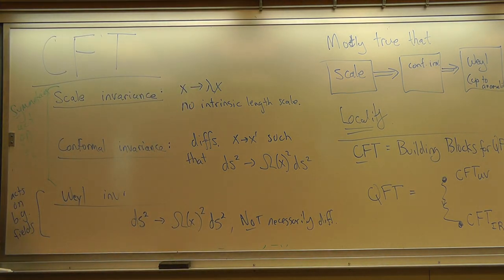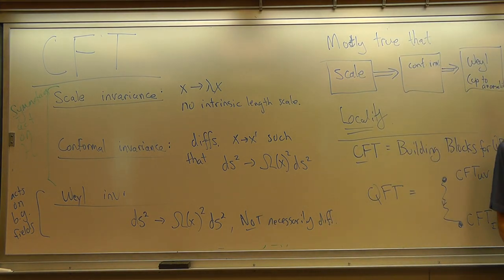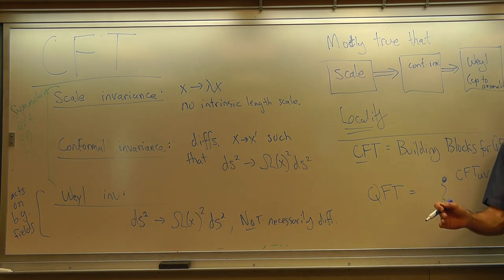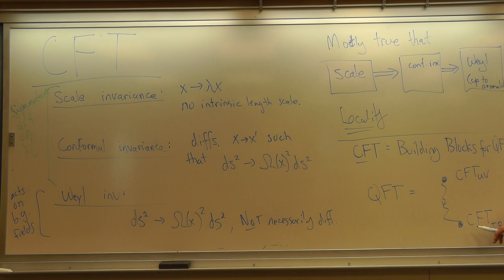QCD is asymptotically free in the UV, so up there we have a free theory. In the infrared, QCD is gapped, so that theory is just the trivial theory. So it's free up here and nothing down there — it does fit the paradigm, with a free CFT in the UV and the trivial theory in the IR.